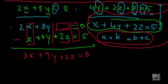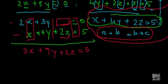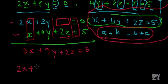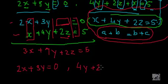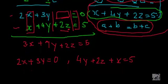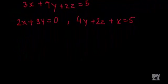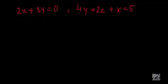Now we'll learn addition using the horizontal method. We'll use the second example again. Let's rewrite the equations: first is 2x plus 3y equal to 0, and the second is 4y plus 2z plus x equal to 5. Now let's learn the horizontal method of addition.